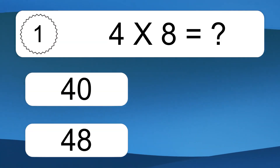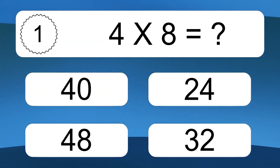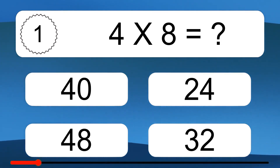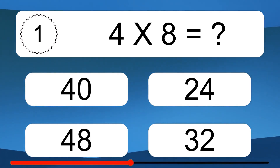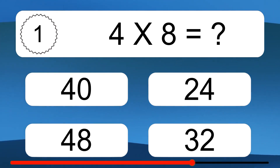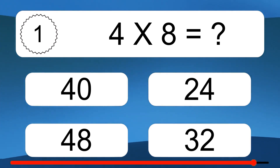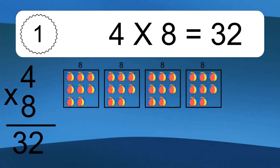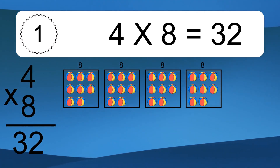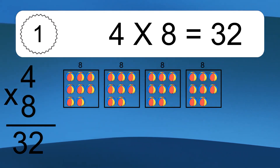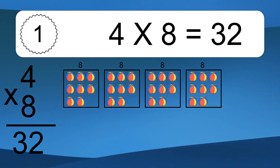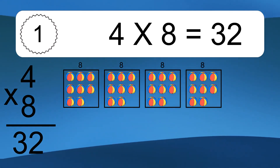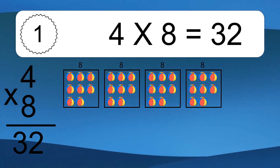4 times 8 equals what? 4 times 8 equals 32. We have 4 boxes, and each box has 8 colorful balls inside. If you count all the balls in all the boxes together, you will have 4 times 8 balls. This equals 32 balls.